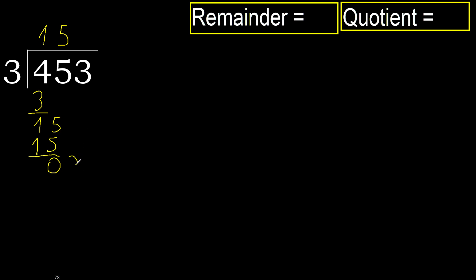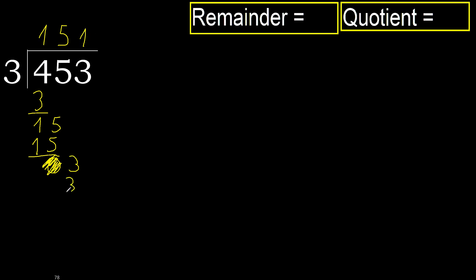Next, eliminate 0 here. 3. 3 multiplied by 1 is 3. Subtract. 0. So next, there is no number, therefore finish it.